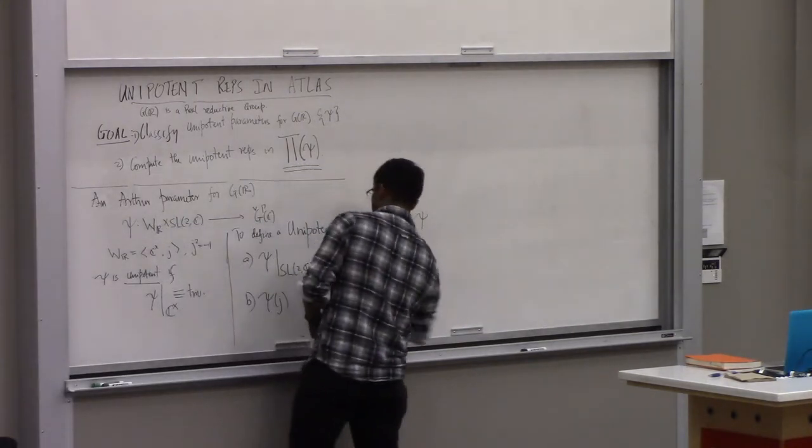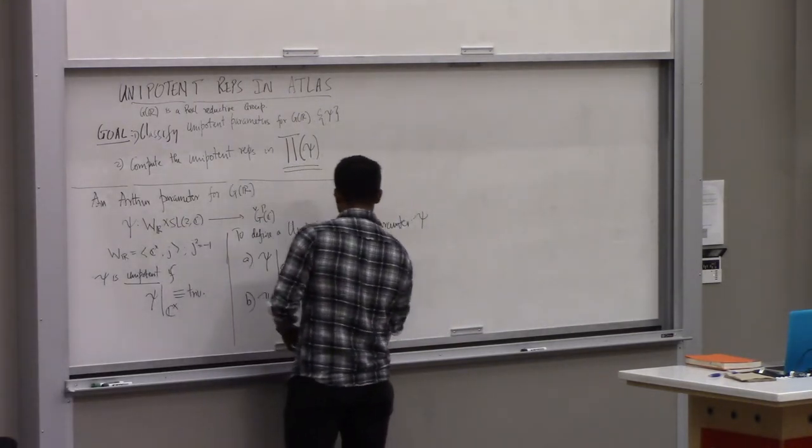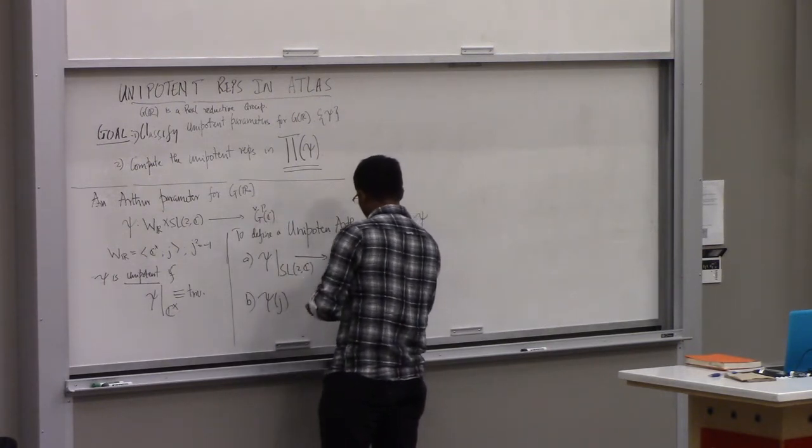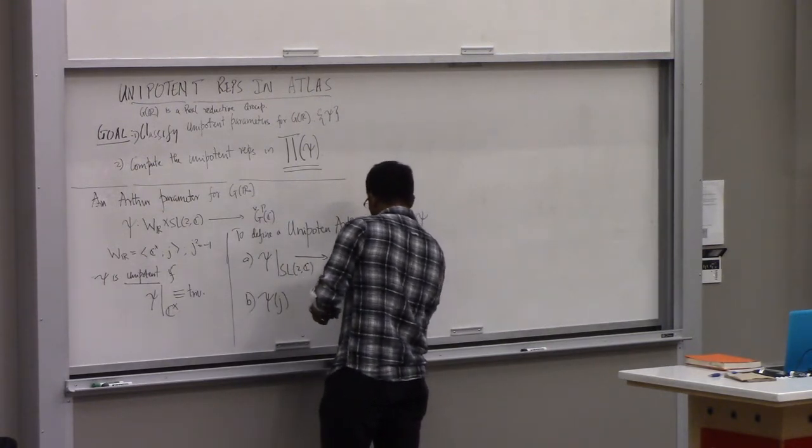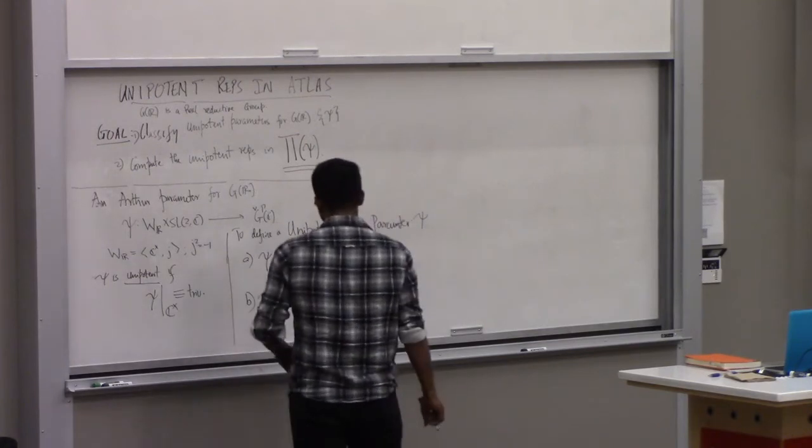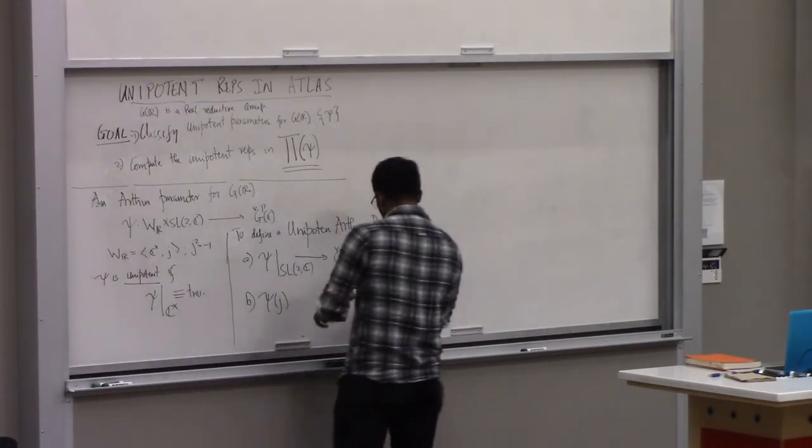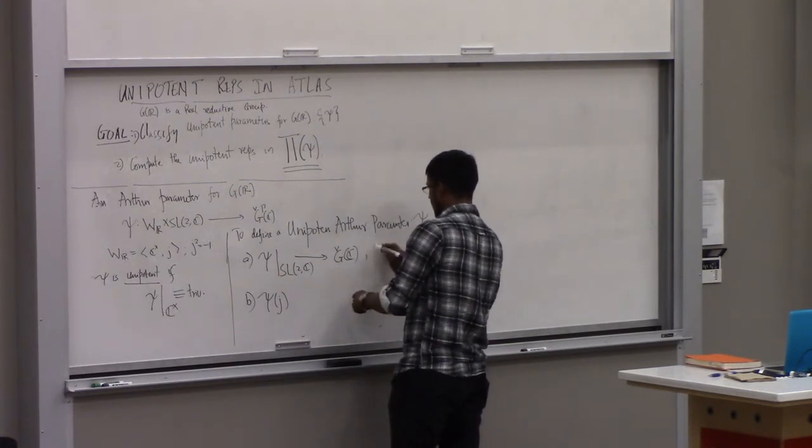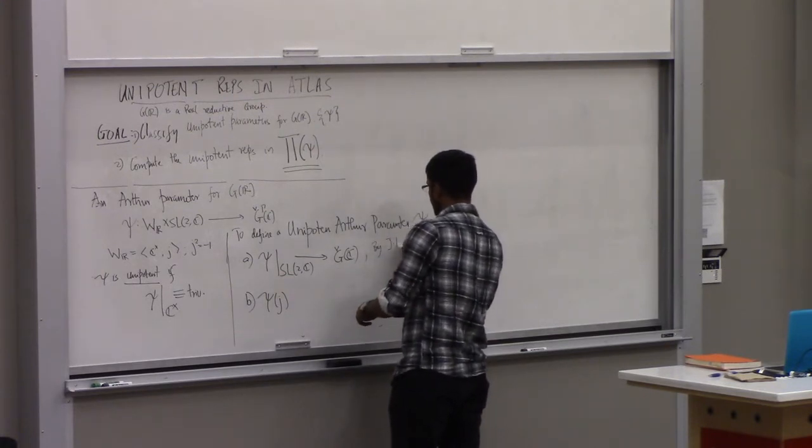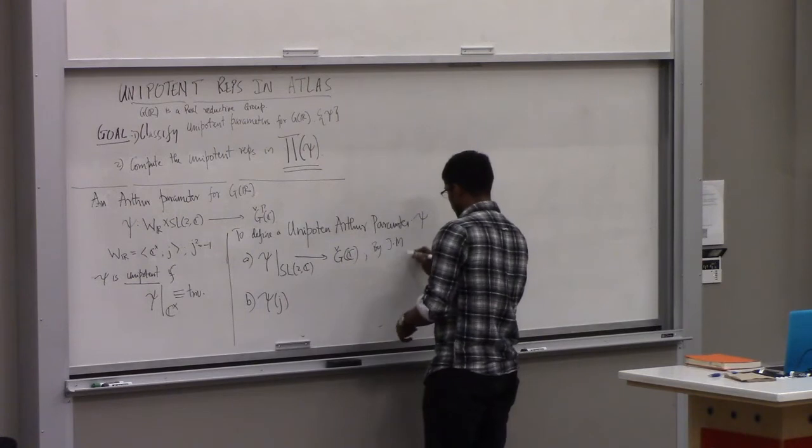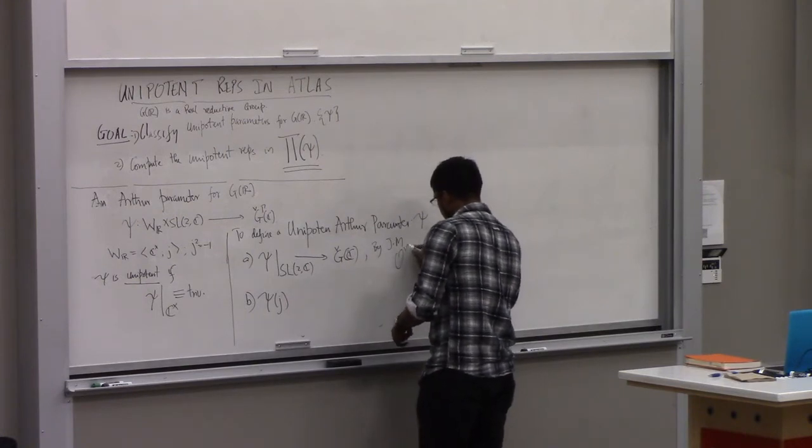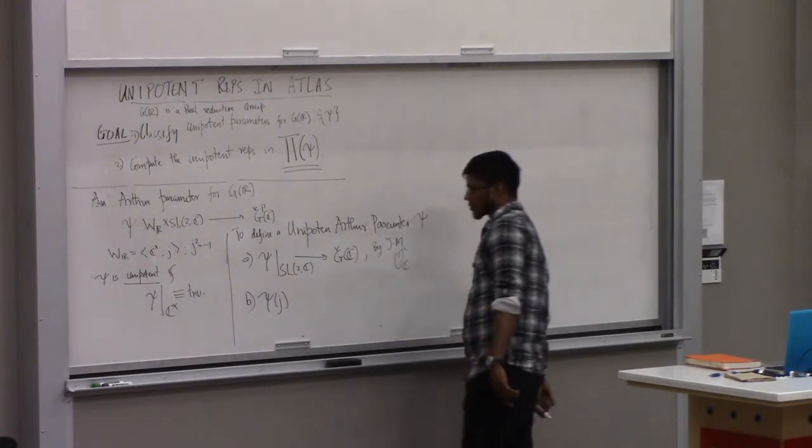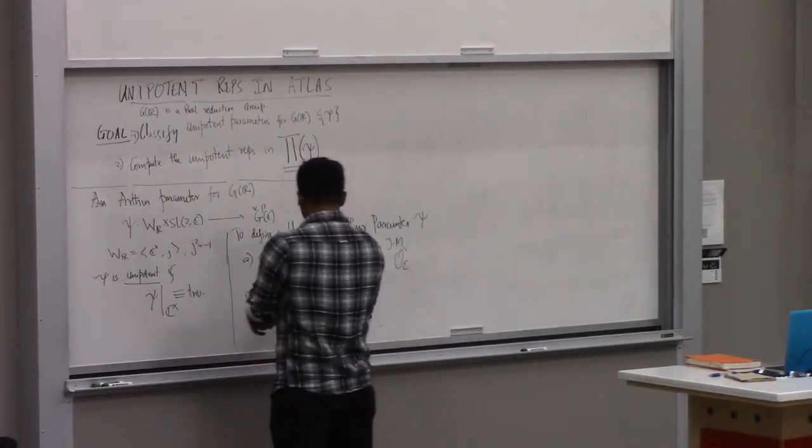So this is a map into the dual group. This is nothing but via Jacobson-Morosov, this gives you a complex dual nilpotent orbit for G_C.